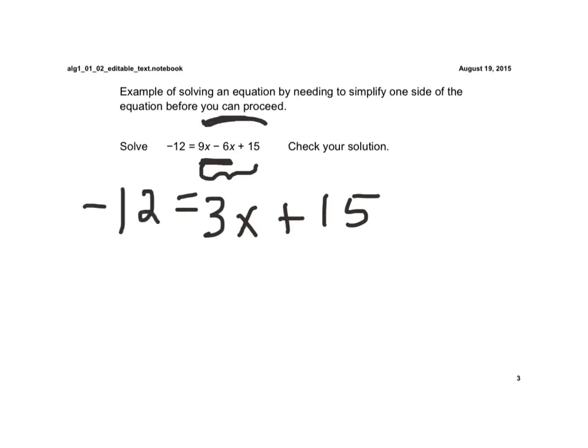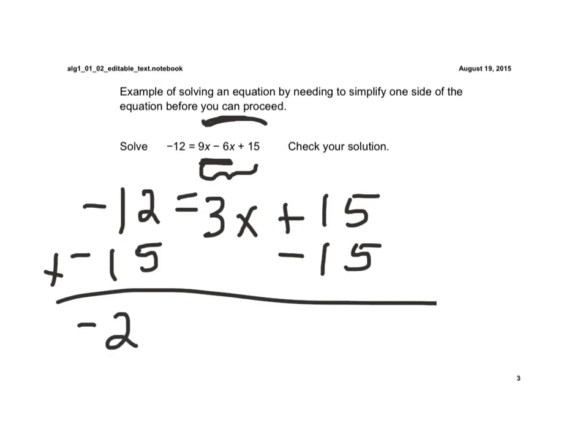So now we're ready to solve, and again, this is just a 2-step equation. We have to get rid of the constant first, so we're going to subtract 15 from each side. And when we do that, remember if the signs are the same, because we're adding here, signs are the same, we add and keep, so that's a negative 27 equals 3x.